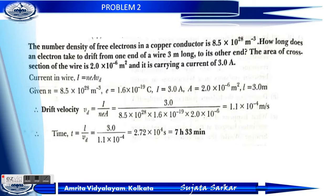Problem 2: The number density of free electrons in a copper conductor is 8.5 into 10 to the power 28 per meter cube. How long does an electron take to drift from one end of a wire 3 meter long to its other end?